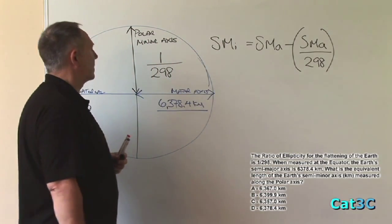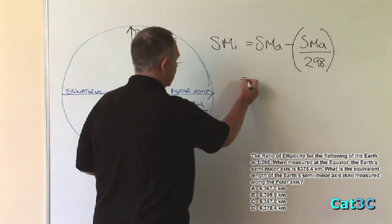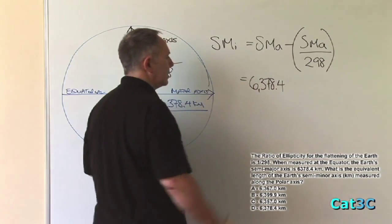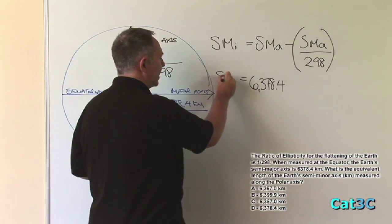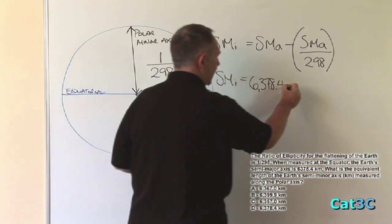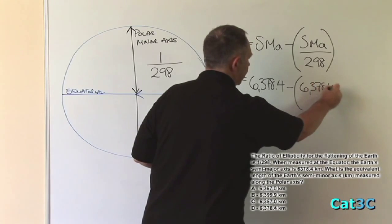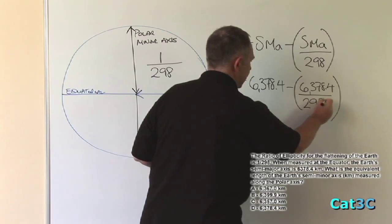We know the value of the semi-major axis is 6,378.4. So to find the semi-minor axis, we have to subtract from that 6,378.4, divided by 298.